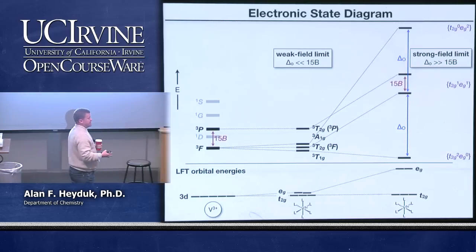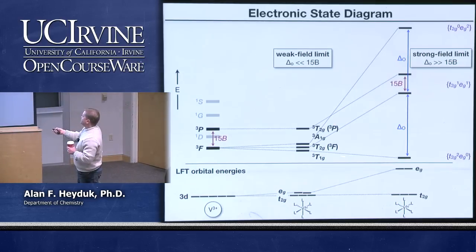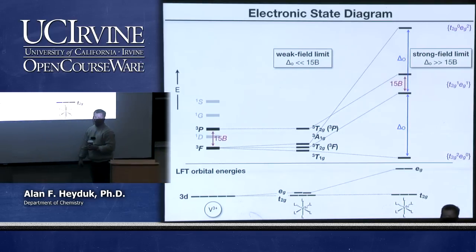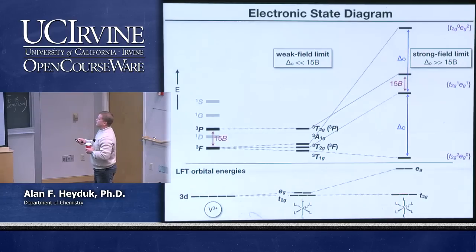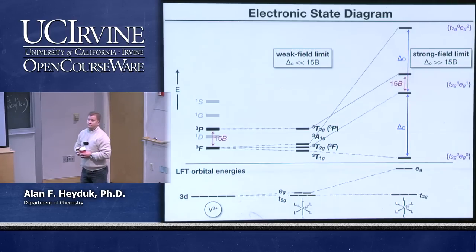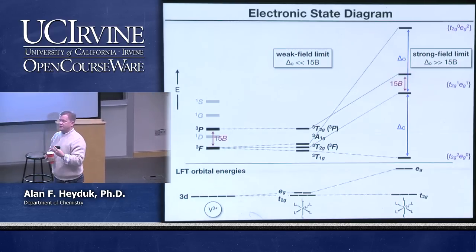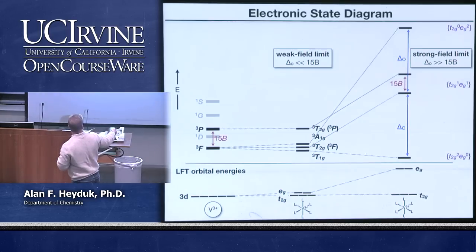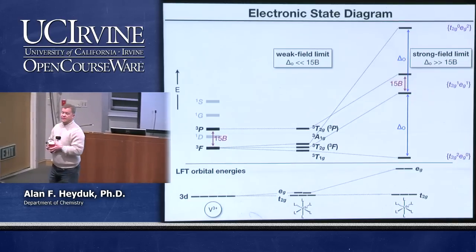Two notable things come from this diagram. First, we have the triplet T1G ground state — corresponding to the different ways to put two electrons into the T2G orbital, basically three different combinations. From that ground state, we have three different excited states — three different possible electronic transitions — which corresponds to the three different photon energies we measure in the UV-visible spectrum of hexaquavanadium ion.